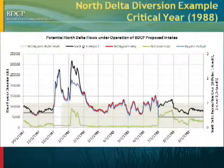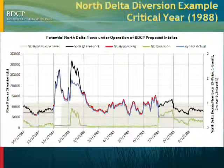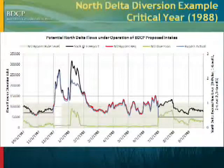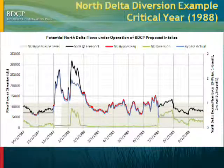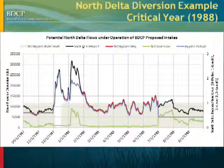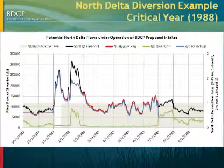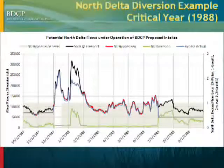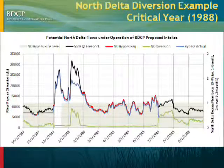This plot shows an example of what the bypass flow would look like under one of the years we simulated — 1988, which is a critical year. The gray shading indicates the North Delta bypass rule level: level zero is the initial pulse protection, and levels one, two, and three are the post-pulse operations. The black line is the Sacramento River flow at Freeport. The red line is the required bypass flow based on the rules. The green line is the amount of diversion occurring, and the lighter blue line is the actual bypass flow downstream of the intakes.